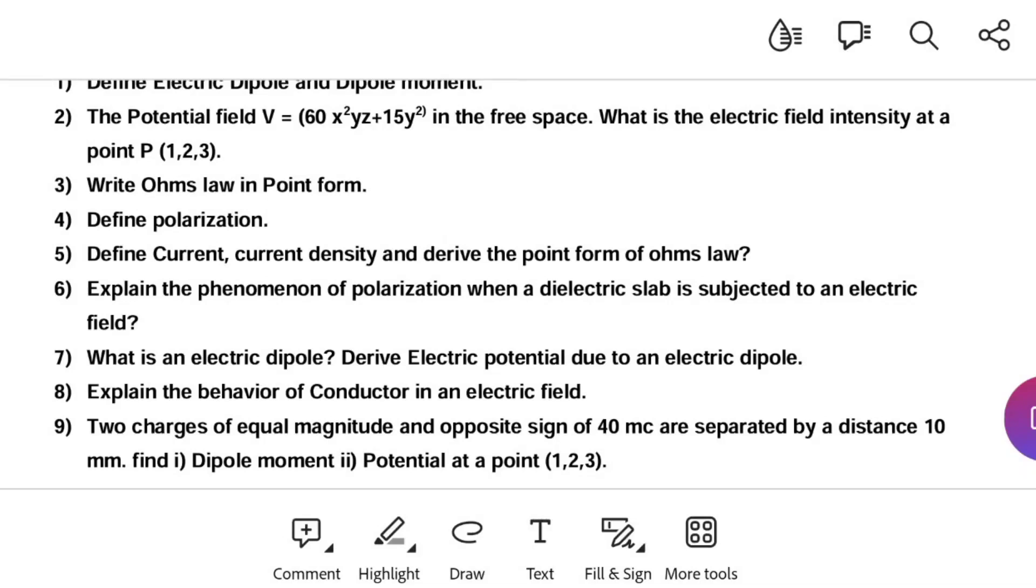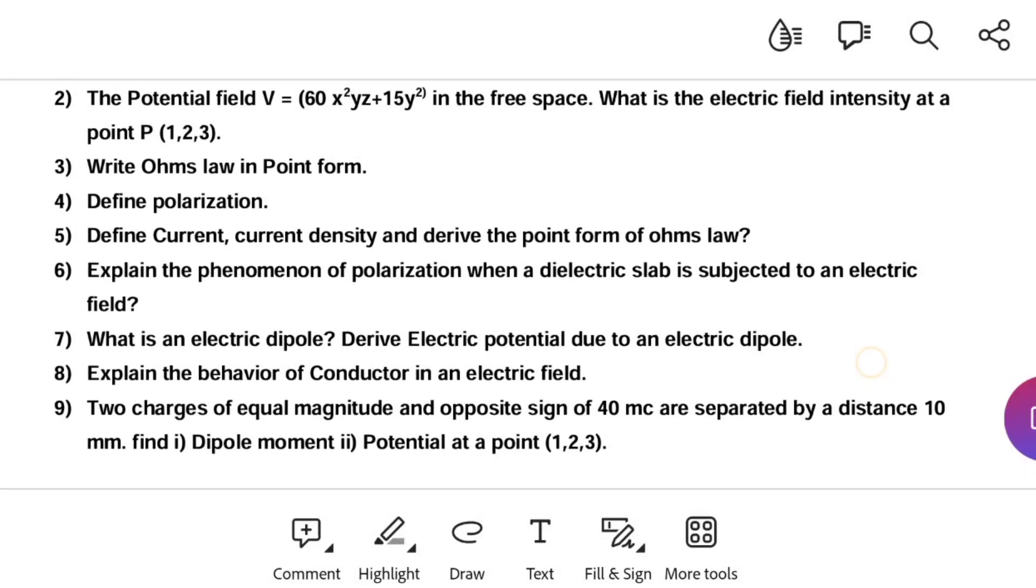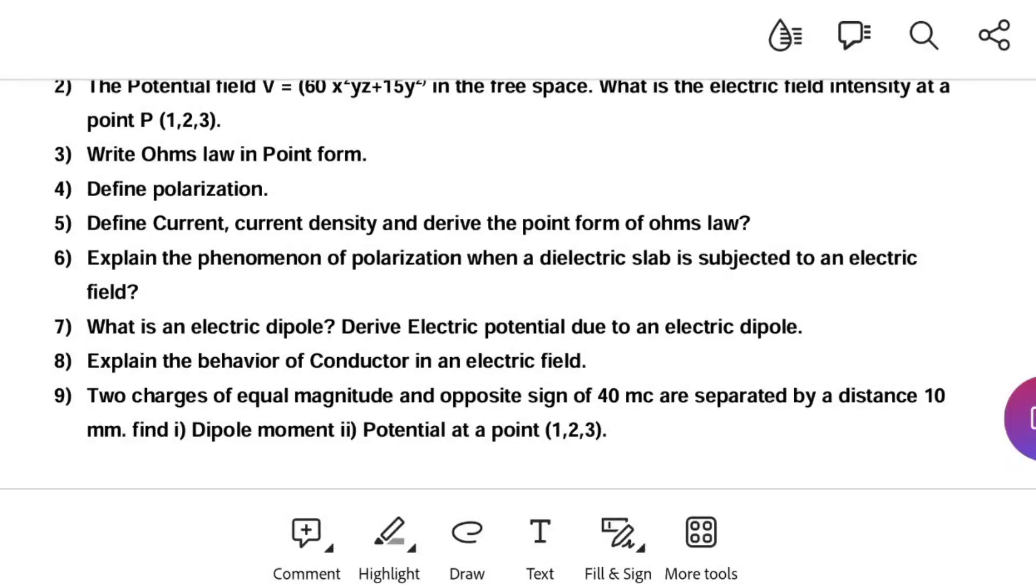Dipole moment per unit volume is called polarization. Define current density and derive the point form of Ohm's law. Explain the phenomenon of polarization when a dielectric slab is subjected to an electric field. How polarization will happen that we have to explain by using diagrams.